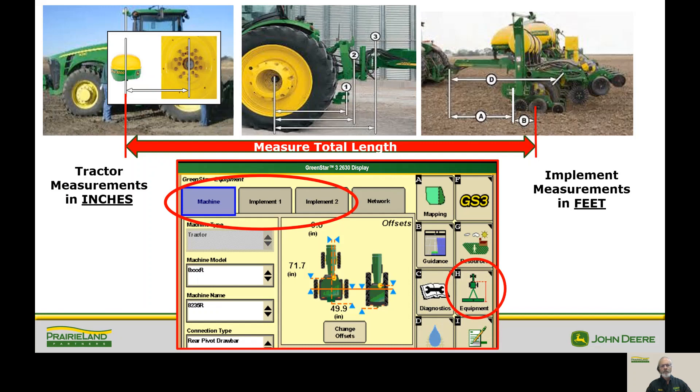The first one I want to point out is the measurements. Getting the measurements correct is really important. As you'll notice from this screen, I like to recommend that we do a complete measurement, tape all the way from the center of the receiver to back here where the seed hits the ground. Once you have that measurement, now we're going to break that apart and put it into the display under the four measurements.